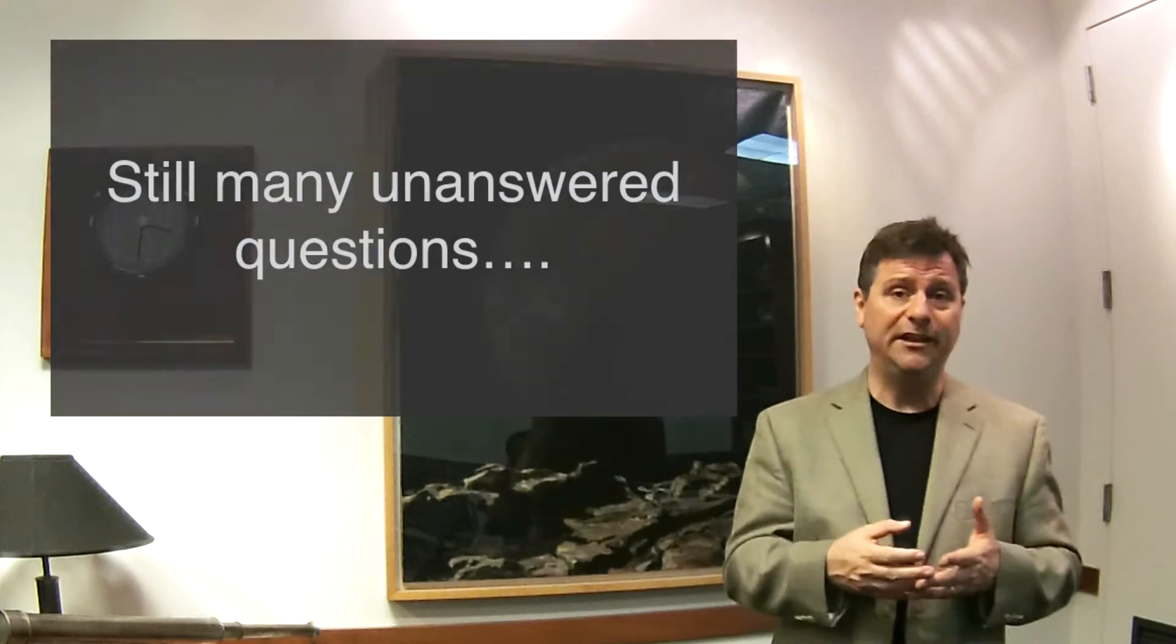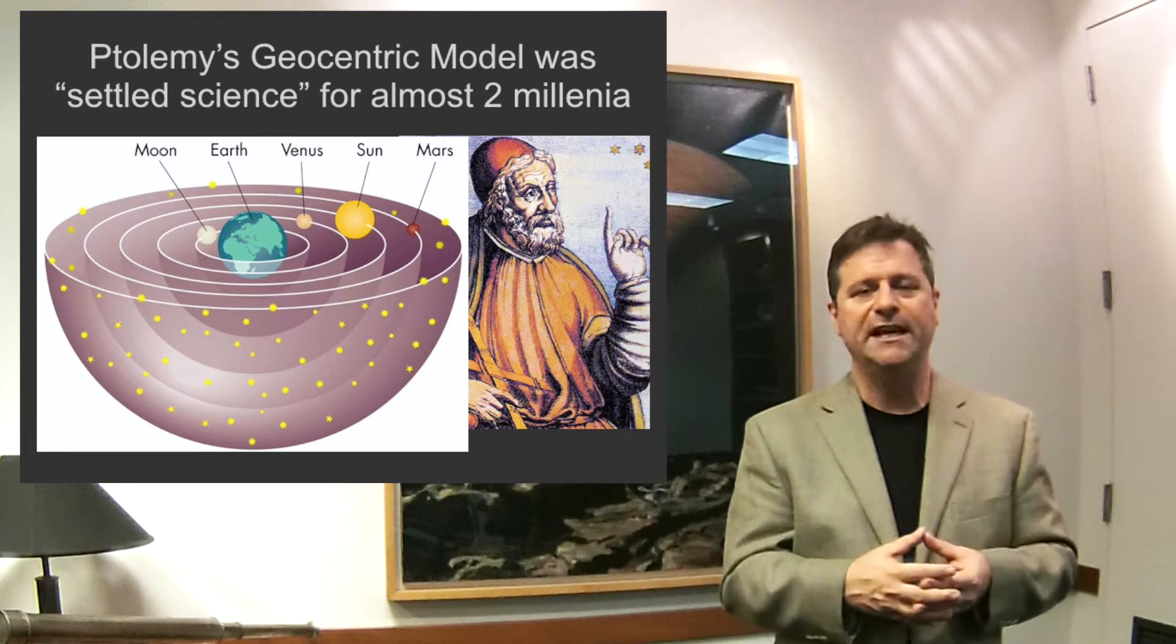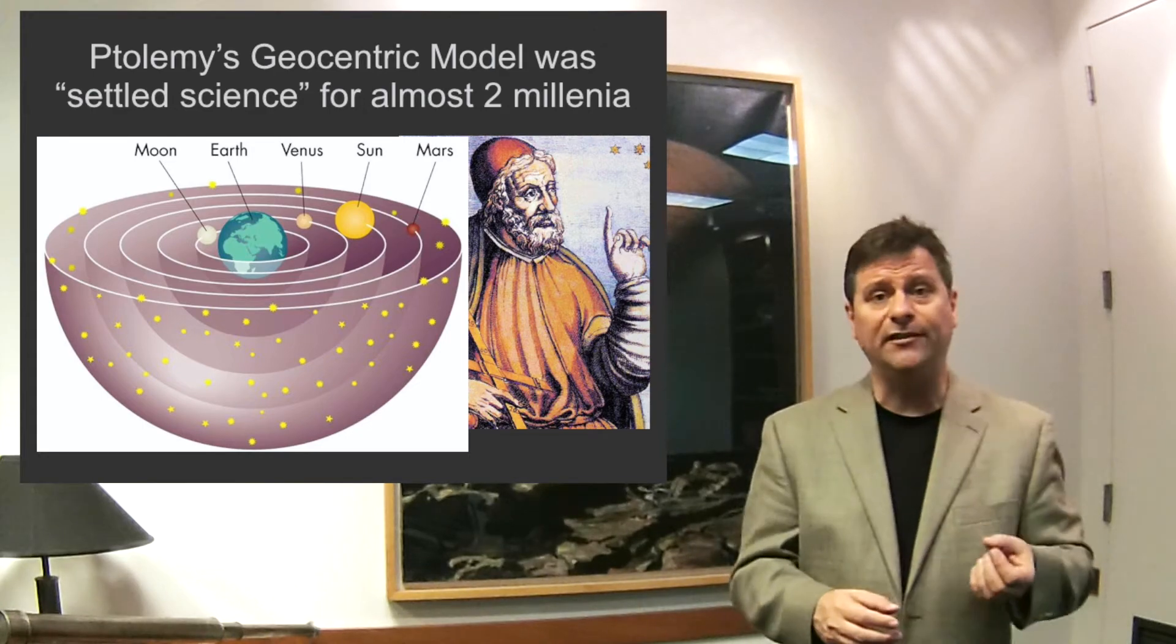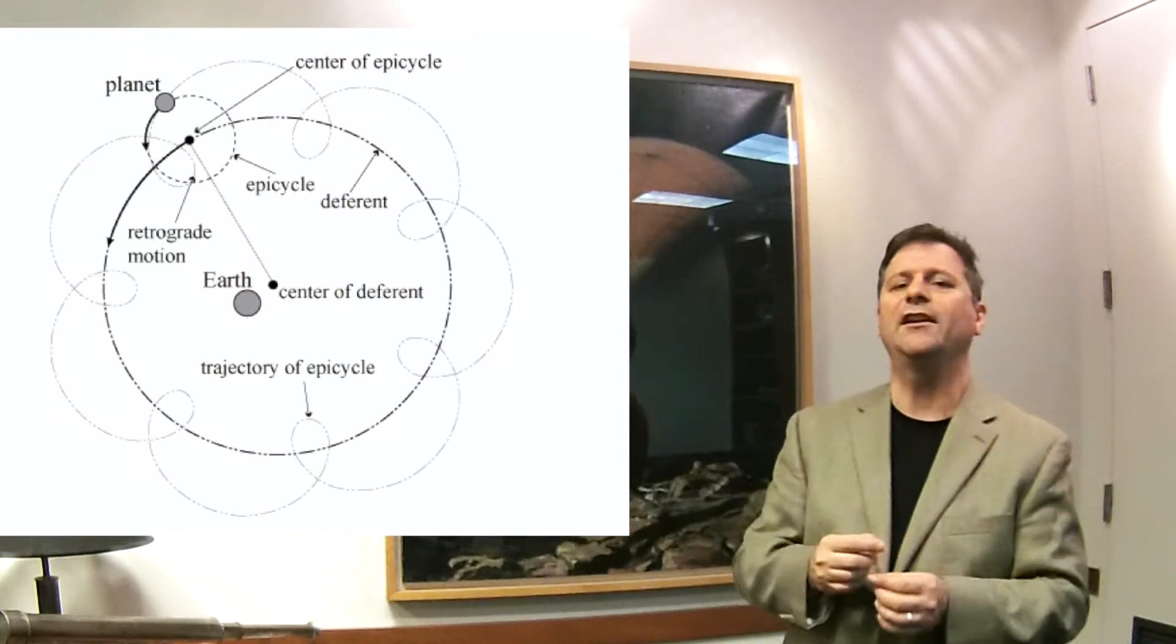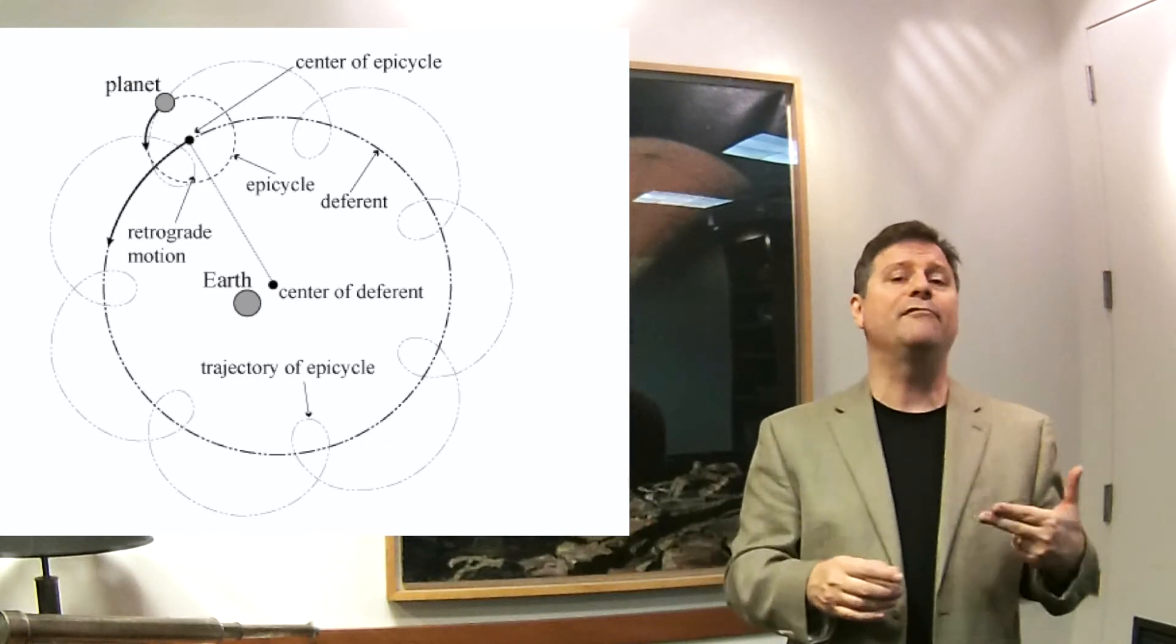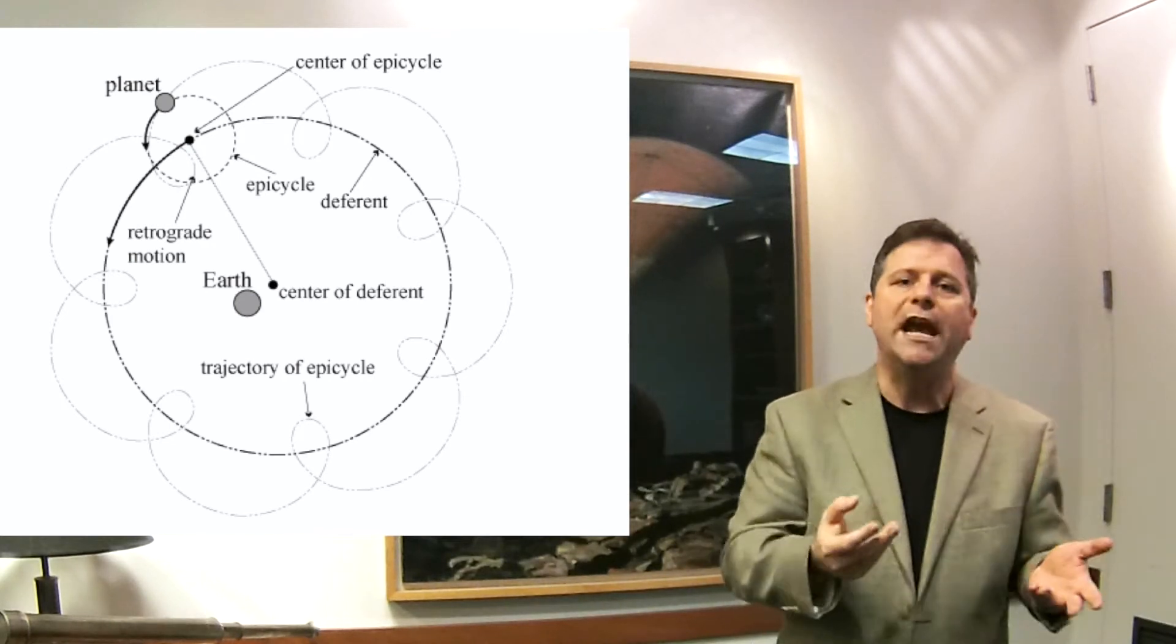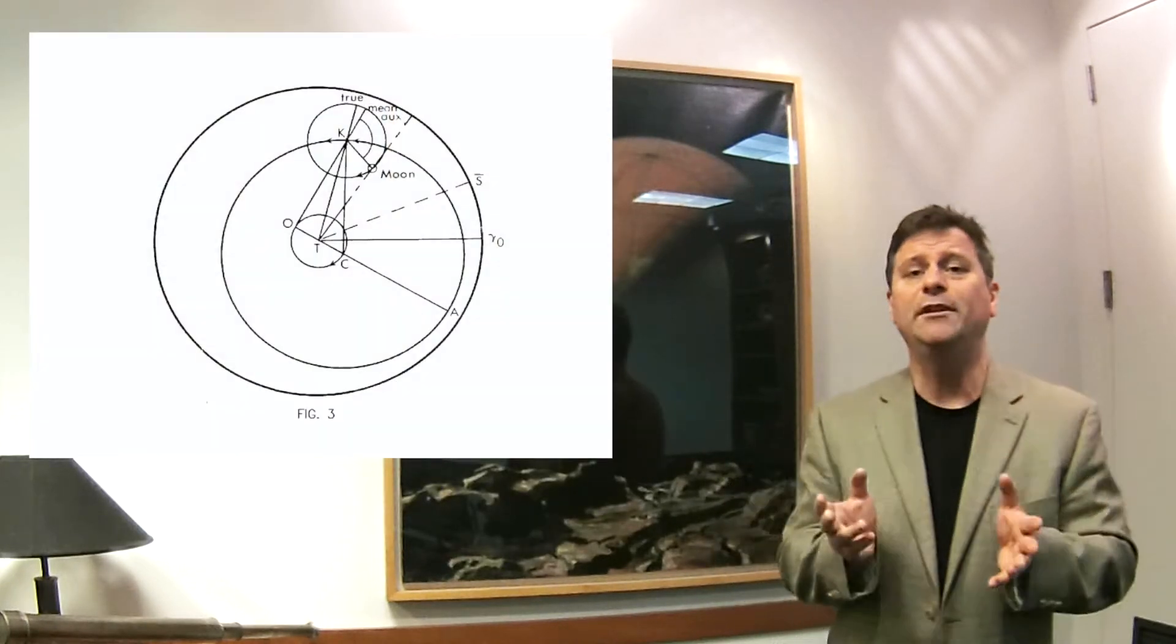Because for almost 2,000 years, the geocentric model, the geocentric apparent or settled science of the world was geocentrism. It thought that Ptolemy's model of the cosmos with the Earth at the putative center, with all the planets orbiting around it on deferents and epicycles. And the epicycles were centered on deferents, and the deferents weren't actually centered on the Earth, but were centered somewhere halfway between the Earth and something called an equant. And every planet had its own equant, its own deferent and set of epicycles. Yeah, it's pretty complicated. So the geocentric model of the cosmos is an extremely complicated thing.